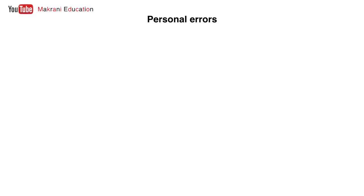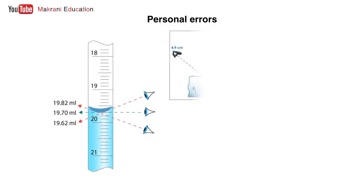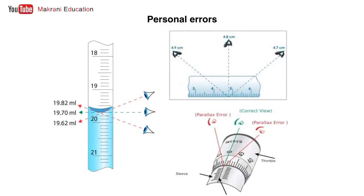Next is personal errors. Personal errors are majorly resulting due to parallax in observations. Yes, by creating some angles with the correct view, you are going to face some errors in your measurement, and that depends on which direction from the correct view you are taking the readings. Here are three examples of these parallax errors, which are personal errors, as we can see from the figures.